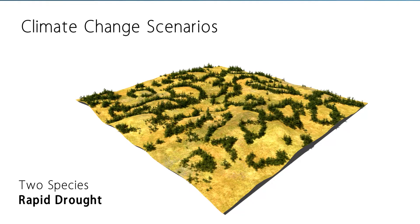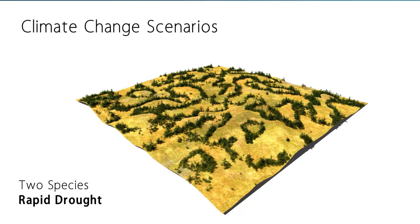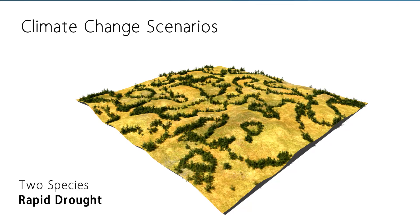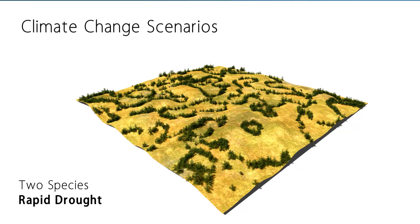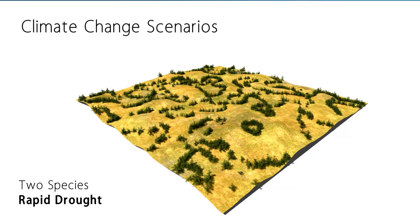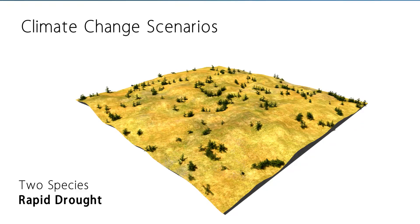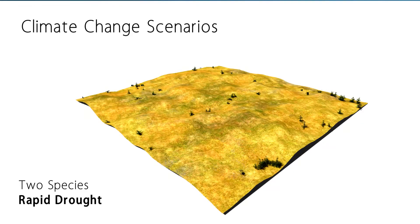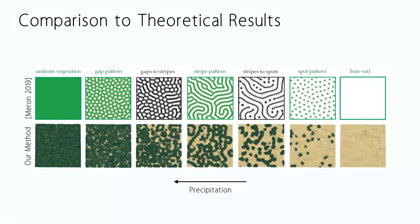In this scenario, the more drought resistant pine trees form stripe-like vegetation patterns as the drought eliminates the shrub species. Our simulation results not only produce interesting patterns, but also conform to theoretical results discussed in ecology research.